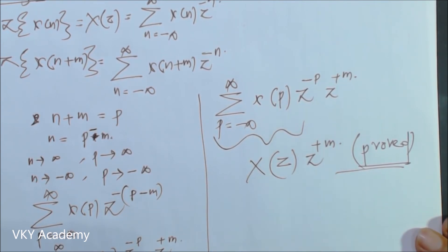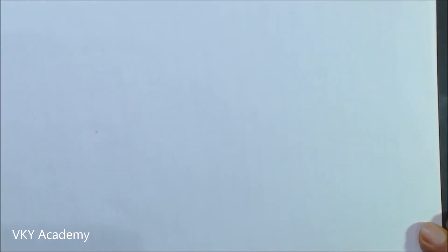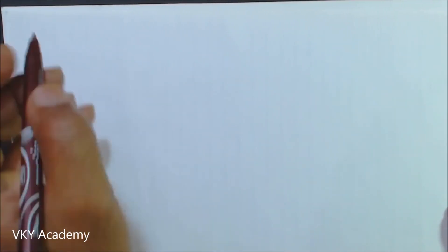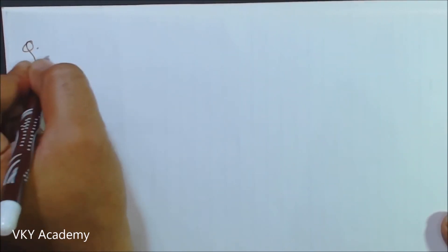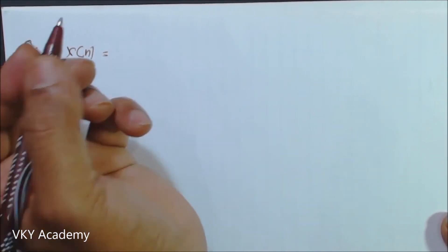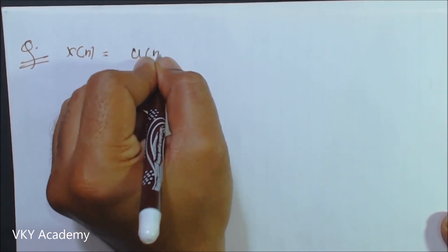So with this simple method we can prove the shifting property of Z transform. Now let us see one numerical on the shifting property of Z transform, to show how to solve a numerical using this property. The question is: x of n is equal to u of n minus 2. Determine the Z transform for the given function.